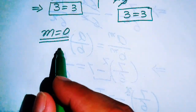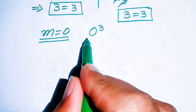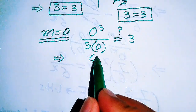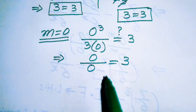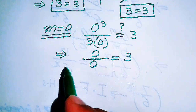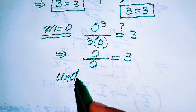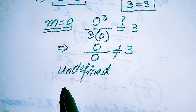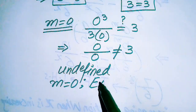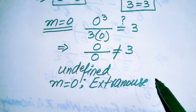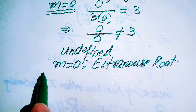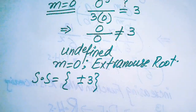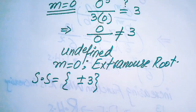Now we check the third root, m equals to 0. Putting it into the equation: 0 cubed divided by 3 times 0 equals to 3 or not. Here 0 cubed becomes 0, and 3 times 0 becomes 0, giving 0 over 0, which is the indeterminate or undefined form. Since the left hand side is undefined, both sides are not equal, so m equals to 0 is not a solution — it is the extraneous root of the equation. The solution set is m equals plus or minus 3.